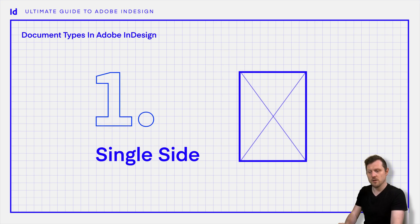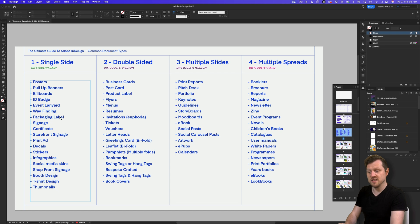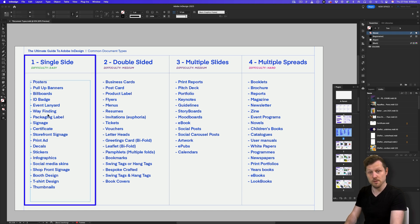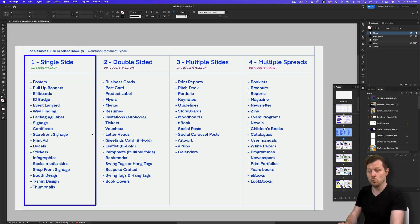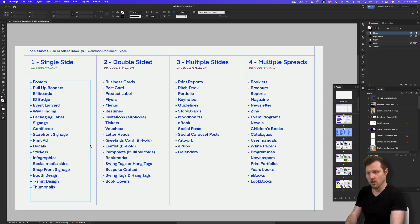One: single side. Looking at this first category, we can see the types of documents that fall into the single side document category. The examples here are some of the most simple documents you can create in InDesign, and the difficulty level here is easy. Here we have a wide range of documents like posters, ID badges, certificates, and packaging labels to name a few. Documents such as these will typically only be printed on one sheet, on one side, or displayed on one screen, so they will only require one surface to be designed.